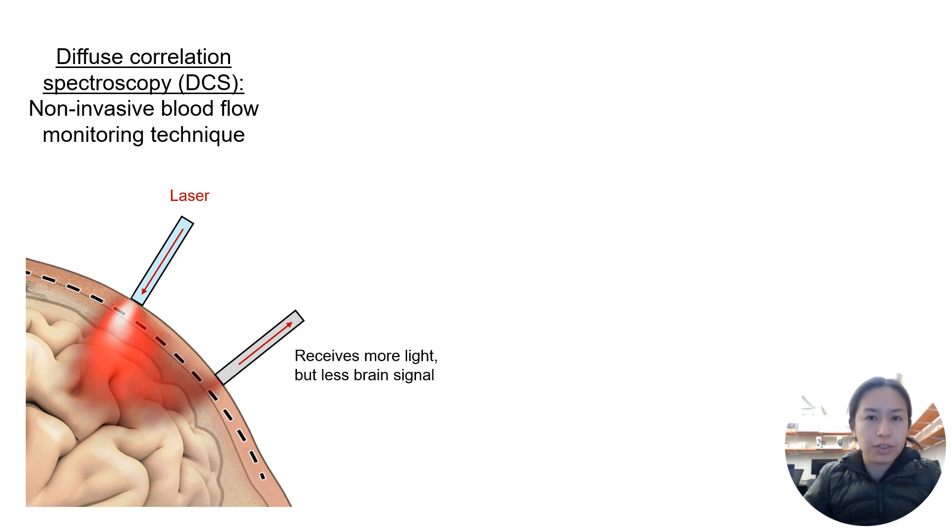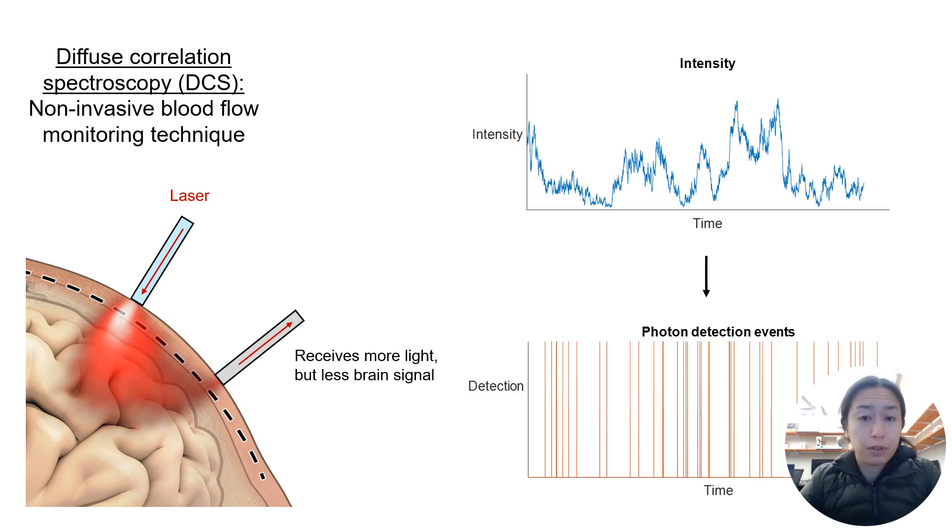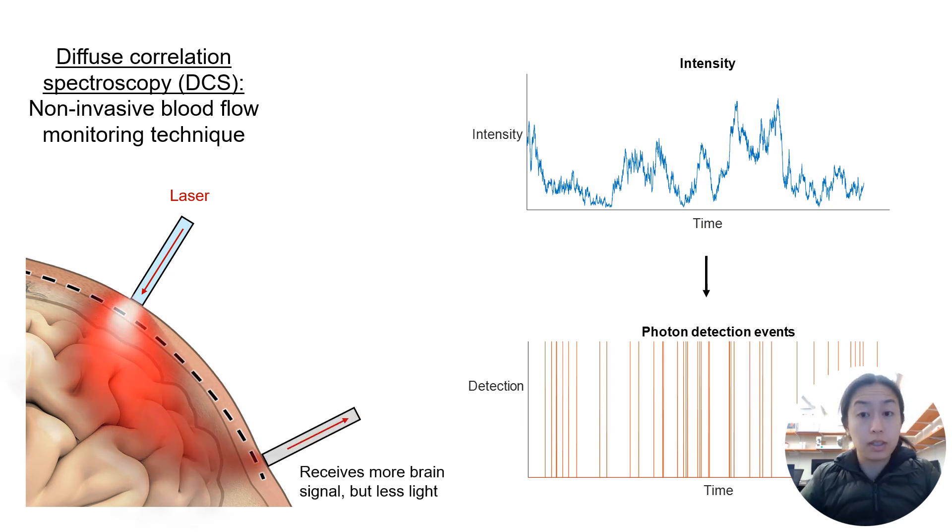A significant challenge in DCS is the trade-off between brain sensitivity and SNR. A detector placed closer to the source will have more light but less brain signal. In this case, we will see many photon detection events.